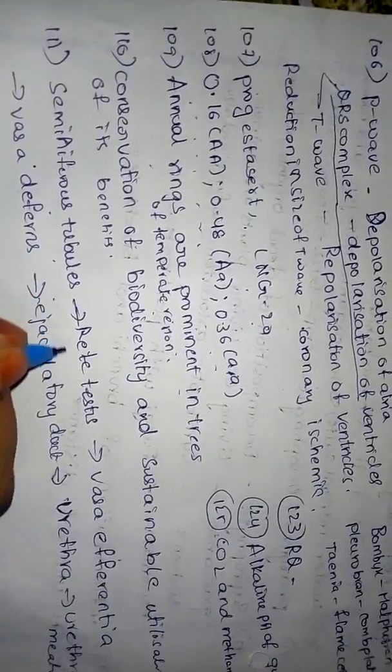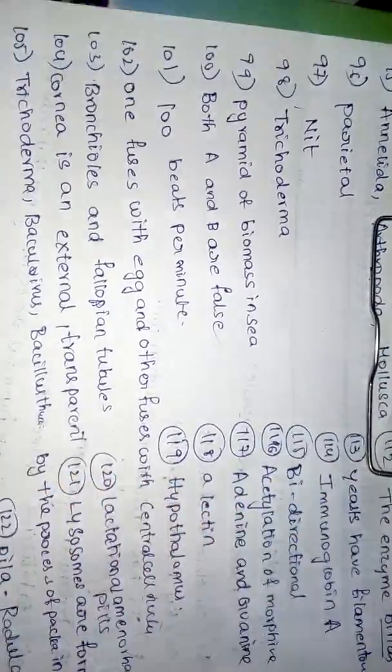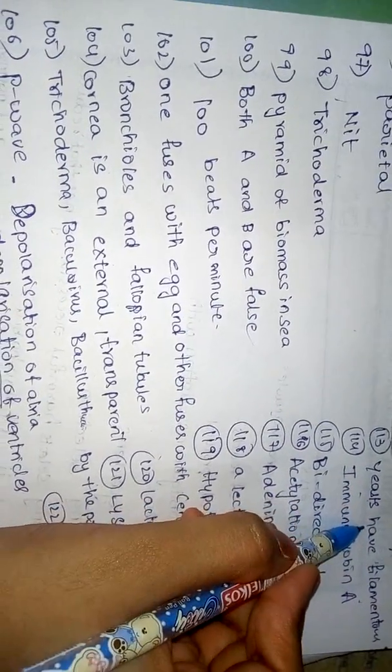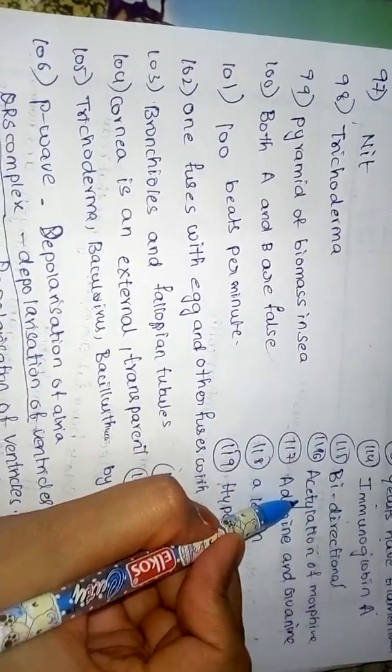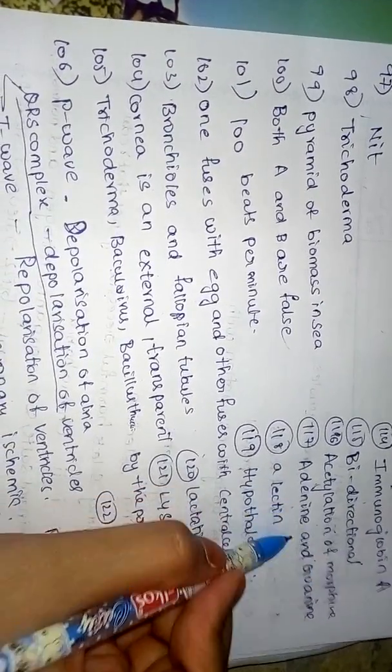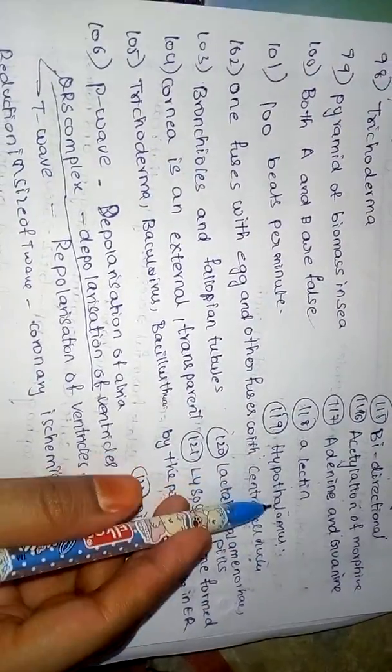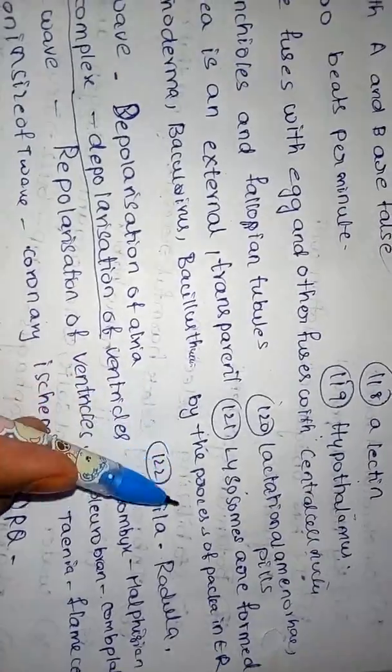Seminiferous tubules, testes, vasa efferentia, vas deferens, ejaculatory duct, urethra, urethral meatus. And next, bi-directional flow. The enzyme binds, this is a continuation. Correct is yeast are unicellular. They're not filamentous. Immunoglobulin in here. Cholesterol, bi-directional phloem. I think stylization of morphine, heroin, adenine and guanine purines, elastin. Hypothalamus, thermoregulation. I think cancer here. Lactational amenorrhea. Pills, lysosomes are formed by the process of packaging in endoplasmic reticulum. Wrong, endoplasmic reticulum.